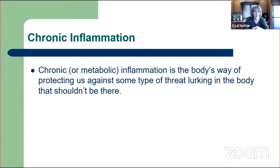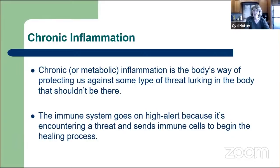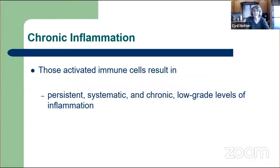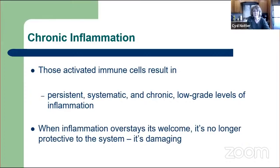Chronic inflammation, or metabolic inflammation, is the body's way of protecting us against some type of threat that's lurking in the body that should not be there. The immune system goes on high alert and sends immune cells throughout the body to combat that threat. Those activated immune cells result in persistent, systematic, and chronic low-grade levels of inflammation that play a part in the majority of our diseases today. When inflammation overstays its welcome, it's no longer protective—it's actually damaging. It's as though we're red hot and painful all over on the inside because our immune system stays overactive.